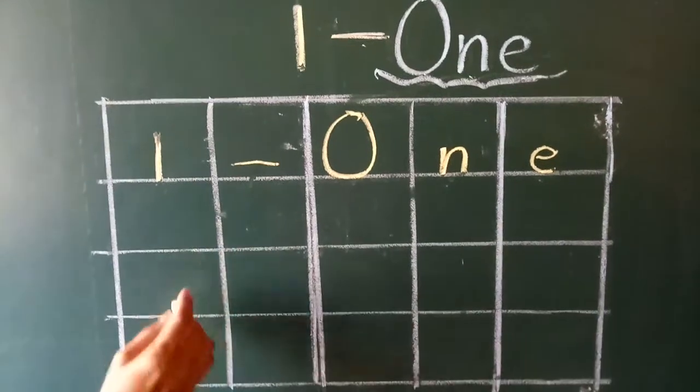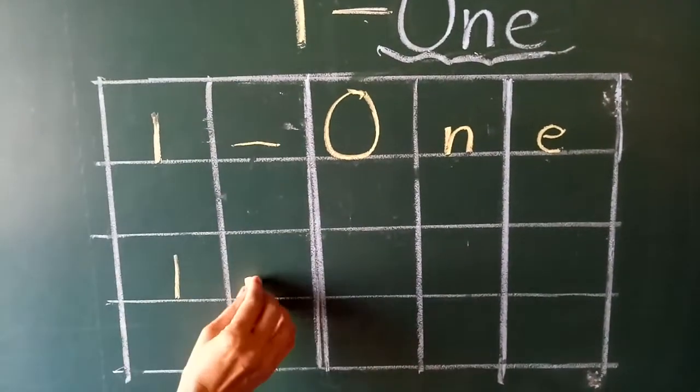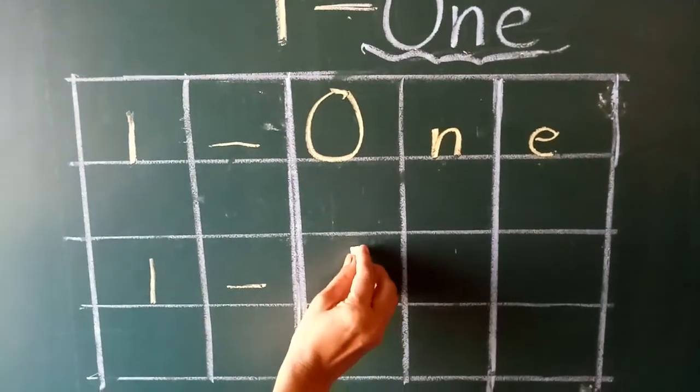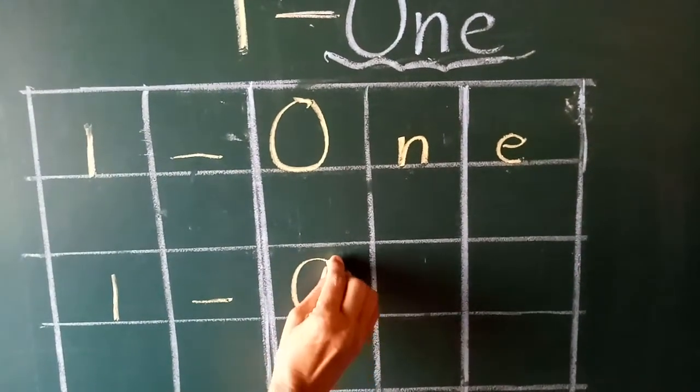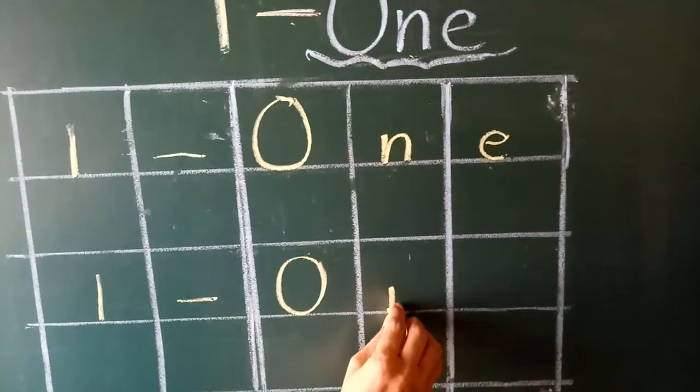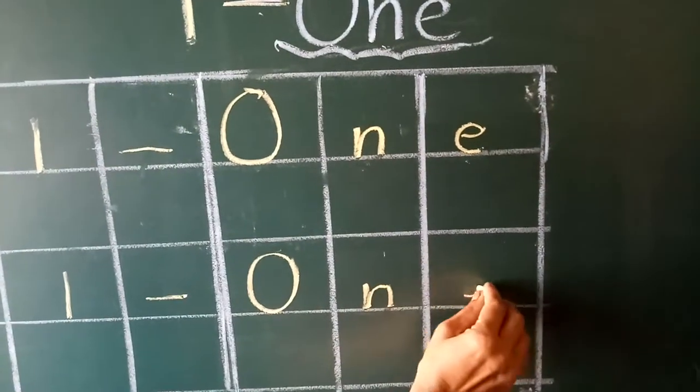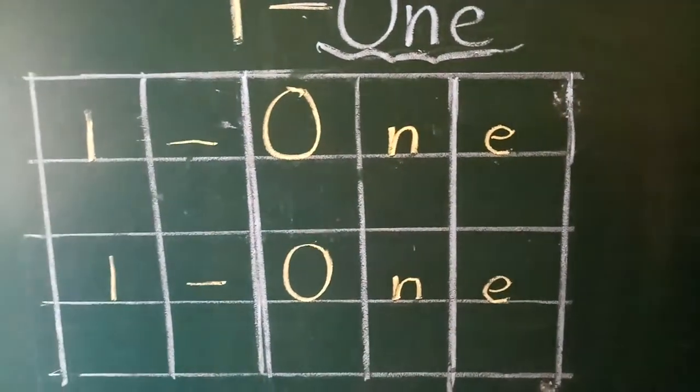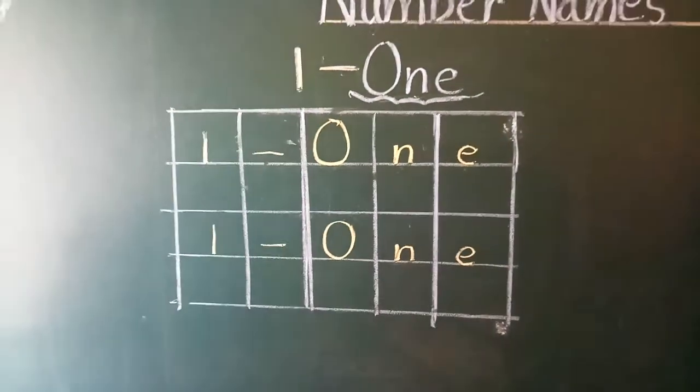Leave this box. Again, you have to write here. Dash. Speak with me. O-N-E. One. Like this, you have to write.